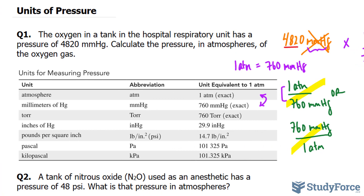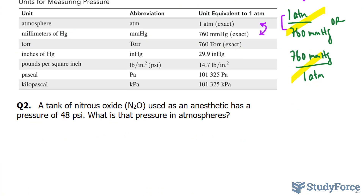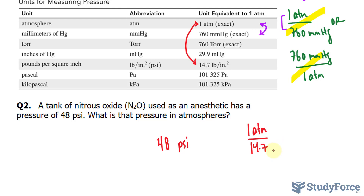That's the answer to question number one. Let's move on to question two. A tank of nitrous oxide, used as an anesthetic, has a pressure of 48 psi — what is the pressure in atmosphere? So once again, we have to convert to atmosphere. PSI is an abbreviation for pounds per square inch. We have 48 psi, and the conversion ratio between pounds per square inch and atmosphere gives us 1 atmosphere per 14.7 psi, or 14.7 psi per 1 atmosphere.